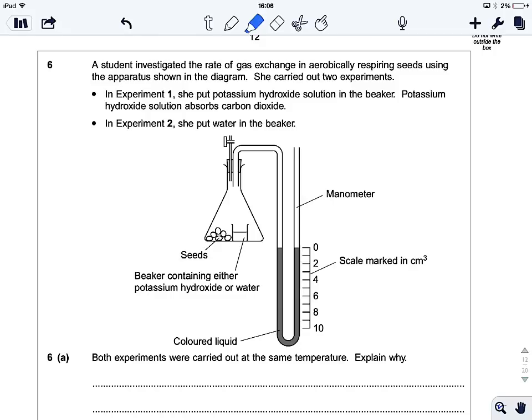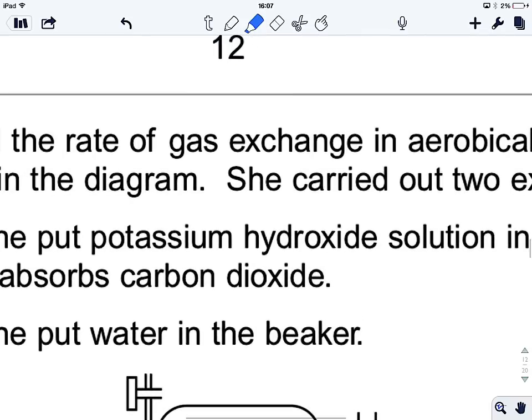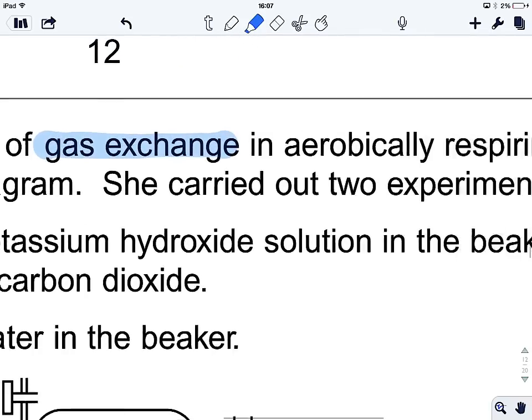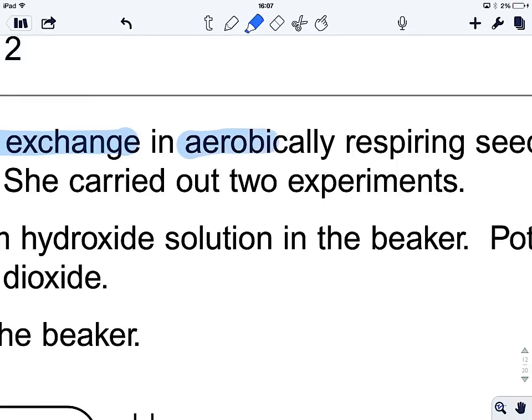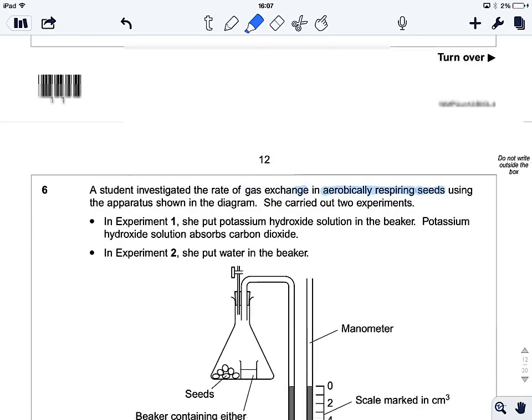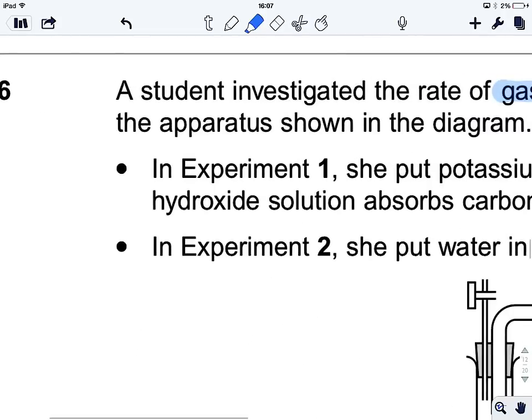So the first thing we need to do is underline or highlight some key words. First thing, gas exchange, because that's the process that's being measured, the rate of gas exchange. Aerobic, aerobically respiring, that's quite important. Seeds might come in handy later if we're talking about plants. Let's have a look. In experiment one, we should highlight that.